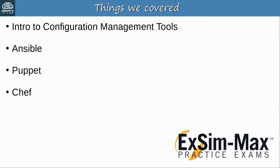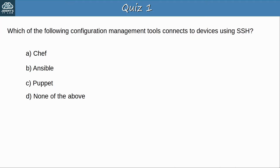Quiz question 1: Which of the following configuration management tools connects to devices using SSH? The answer is B, Ansible. Ansible is agentless, so the control node simply connects to managed devices using SSH. A Puppet external agent also connects to devices using SSH, but standard Puppet architecture does not, so Ansible is definitely the better answer here.